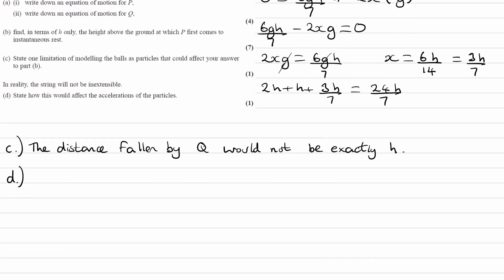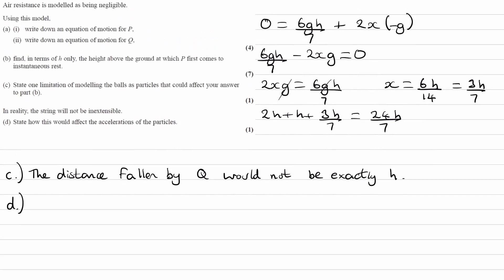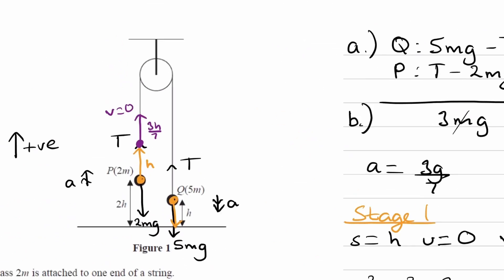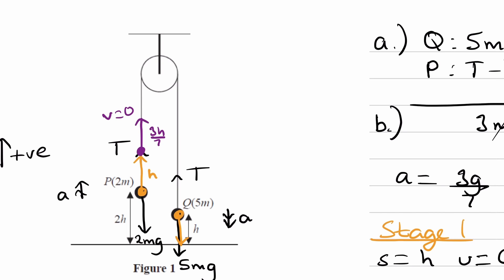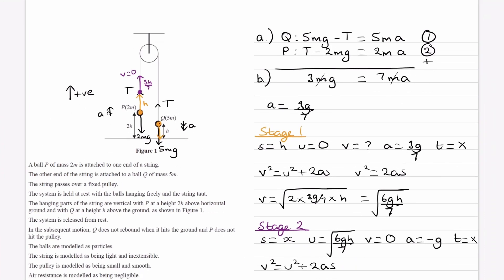And then for part D, it says, in reality the string will not be inextensible. State how this will affect the acceleration of the particles. So then, if the strings are not inextensible, that means they can stretch. So what that would mean is, if Q were to move down, then what may happen is the string will stretch, and then P would not move the exact same distance up that Q moves down. So if you imagine a scenario where you pull Q down quite quickly, and this is like a piece of rubber that we have going over this pulley, then what would happen is the rubber band will stretch that we have, and it will take a split second before P catches up in its motion to what Q is doing. So we move Q down by like a centimeter very quickly, and then it might take a split second before P moves up by that same distance. So if P and Q have different motions, they wouldn't therefore have the same acceleration. So that could be what we write down for part D.